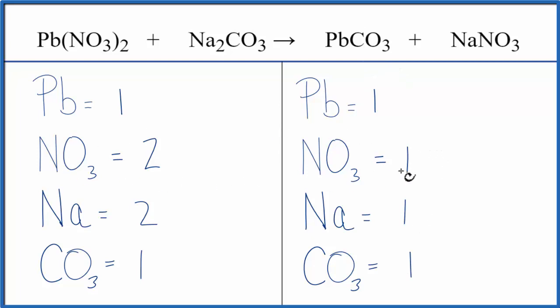Let's balance the nitrates first. We could just put a 2 as our coefficient in front of the sodium nitrate. So 1 nitrate times 2, that gives us 2 nitrates. Those are balanced. 1 sodium times 2, 2 sodiums, and those are balanced.